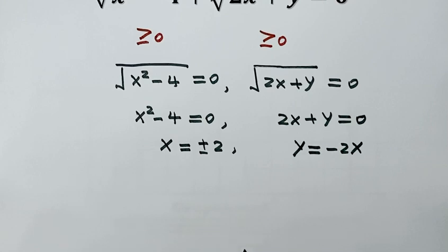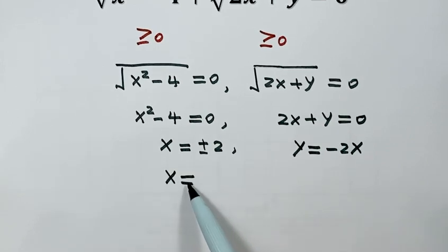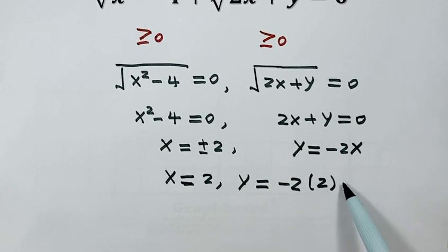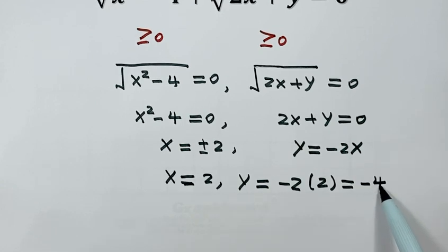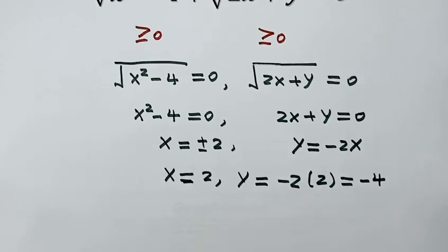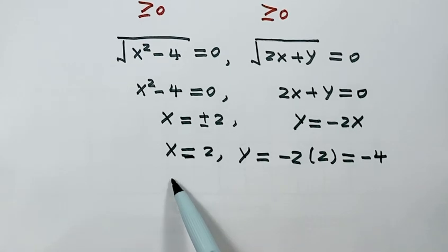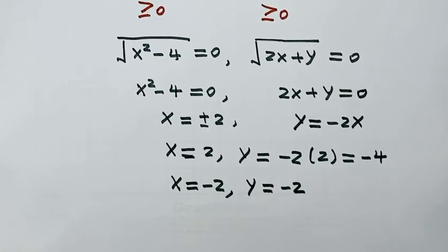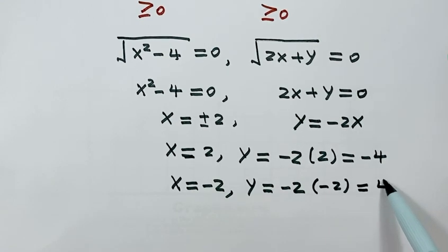We have two solutions for x, so we need to find the corresponding y values. When x equals 2, plug into y equals negative 2x: y equals negative 4. When x equals negative 2, plug in: y equals positive 4.